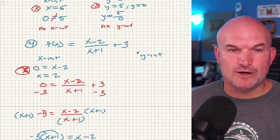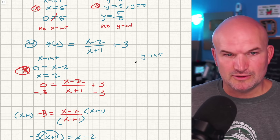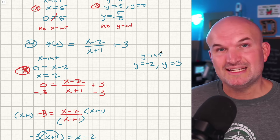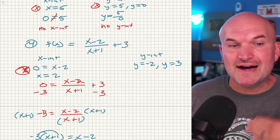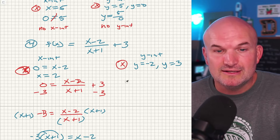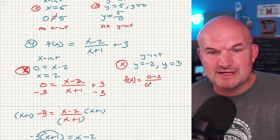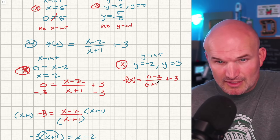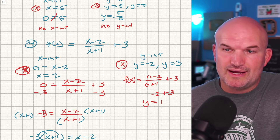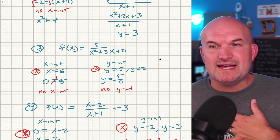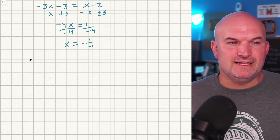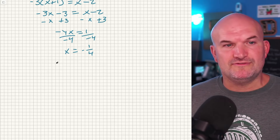For the y-intercept of that same function, students might say y equals negative 2 over 1 (which is -2), or y equals 3 just because they see those numbers. But the y-intercept is when x equals zero. Plugging in: (0-2)/(0+1) + 3 = -2/1 + 3 = -2 + 3, so y equals positive 1. Remember the fundamentals.